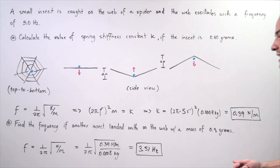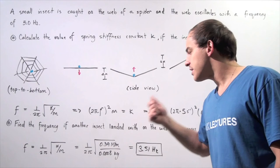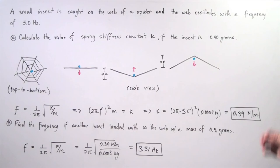0.0008 kilograms. So we plug that into the calculator and we get a new frequency of 3.51 cycles per second.